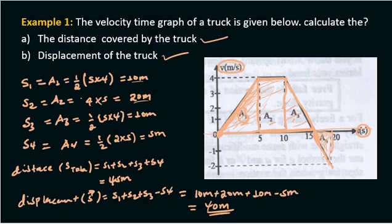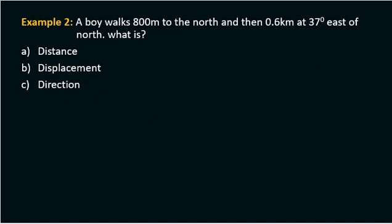Example two: A boy walks 800 meters to the north, and then 0.6 km at 37 degrees east of north. What is the distance, displacement, and direction? The 800-meter leg is visible in the diagram.